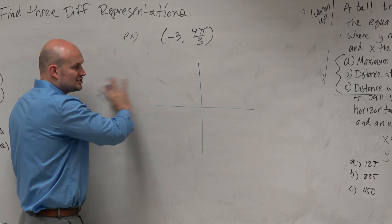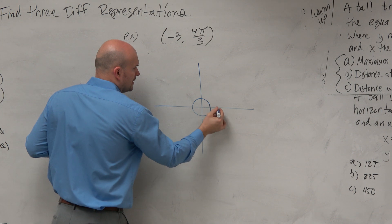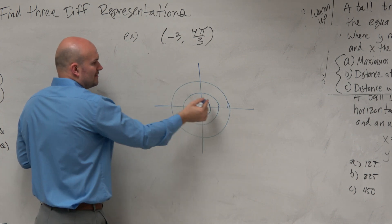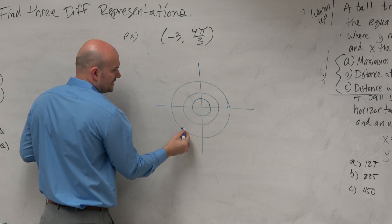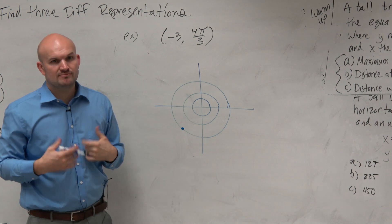Forget the negative for a second. Let's just do it as 3. Forget the negative. 1, 2, 3. So 3, 4π over 3 is going to be down here. Hopefully you guys agree with me that's 4π over 3, and that is 3 right there.